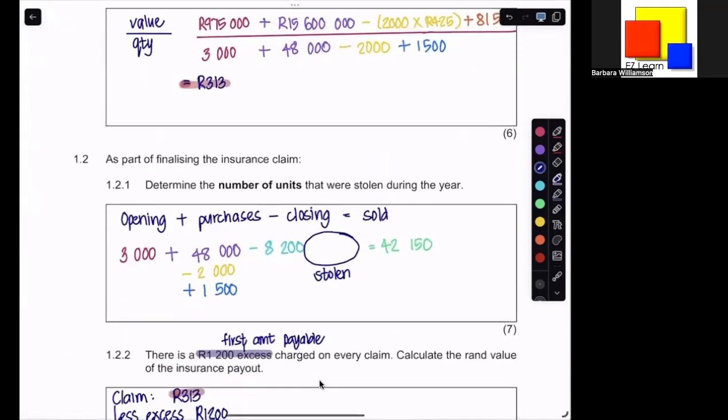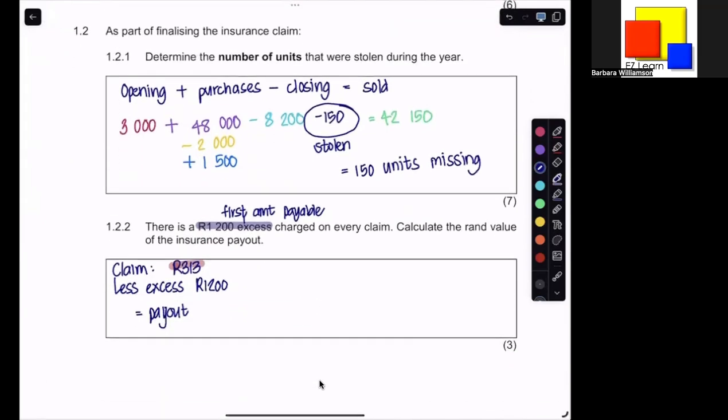Working out the number of units that were stolen, you should find that 150 units are missing as the missing figure over here. And that means that you would claim your 150 times the 313, which would give you a total claim of 46,950.